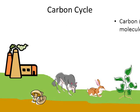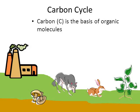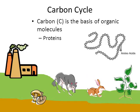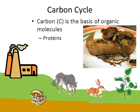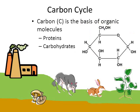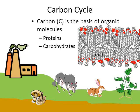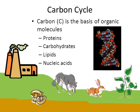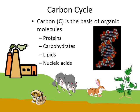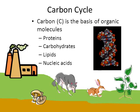Looking at the carbon cycle next — why do we need carbon? Because carbon is the basis of organic molecules. The four categories are: proteins (a chain of amino acids found in fish, eggs, and meat); carbohydrates (like glucose, found in pastas and fruits); lipids (the phospholipid bilayer making up the outer boundary of every cell); and nucleic acids — DNA and RNA, the genetic basis of life. That makes carbon really important.